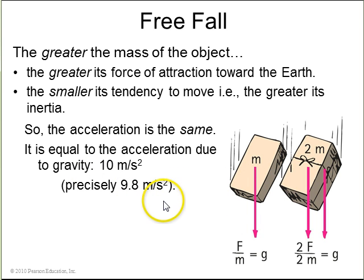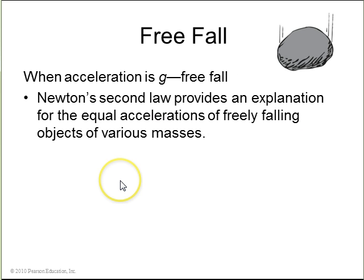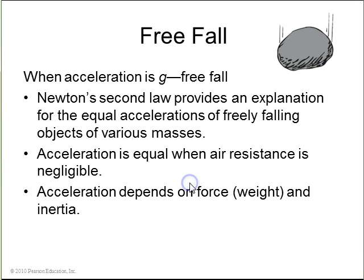All objects of different masses have the same acceleration when they're in free fall. So, here's a single mass. The force is F. Its mass is M. So, its acceleration is F over M. Here is two masses. The force on it is twice as much, twice as much gravity. Divided by twice as much mass, you still get the same acceleration. So, free fall is when the acceleration is G, 10 meters per second squared down. And Newton's second law provides an explanation for the equal accelerations of freely falling objects of various masses. And this is all true when air resistance is negligible.